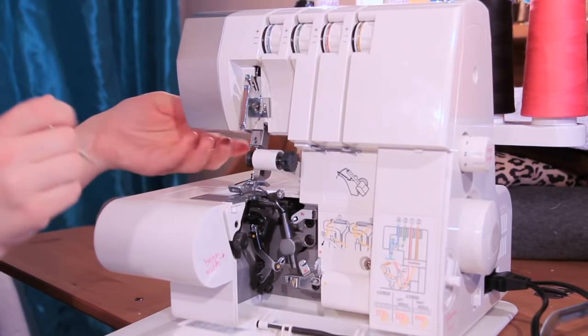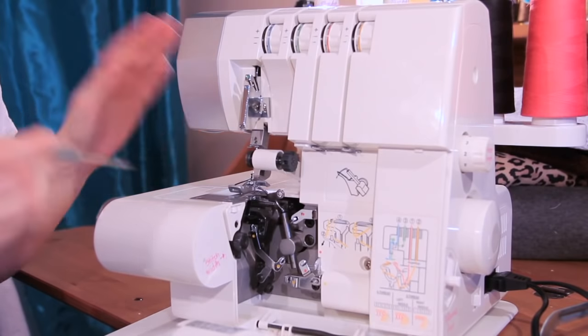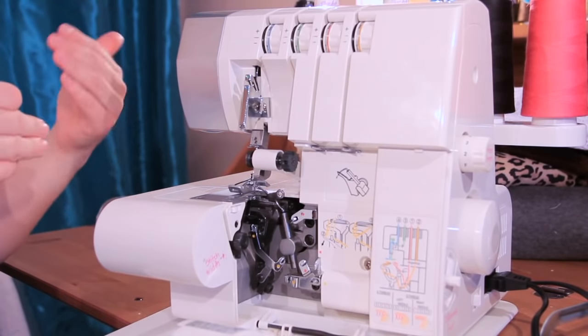Here we have our pressure foot, we have two needle holders. We have an A needle holder and a B needle holder and you'll be able to see that a little bit more close up when we get to the threading.